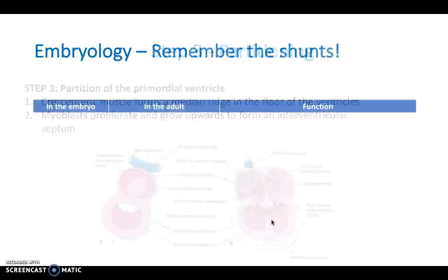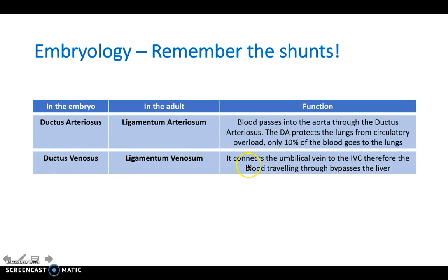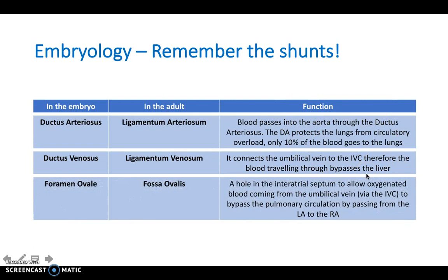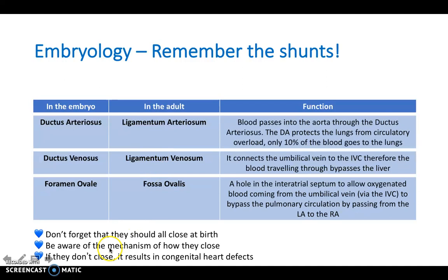Remember the shunts. The ductus arteriosus in the embryo becomes the ligamentum arteriosum in the adult, allowing blood to pass into the aorta and bypass the lungs. The ductus venosus becomes the ligamentum venosum, connecting the umbilical vein to the IVC, so blood bypasses the liver. The foramen ovale — possibly the best-known fetal shunt — in the adult becomes the remnant fossa ovalis: a hole between the right and left atria allowing oxygenated blood from the umbilical vein to bypass the pulmonary circulation. All these shunts should close at birth — if they don't, it can cause congenital heart defects, related to prostaglandins.